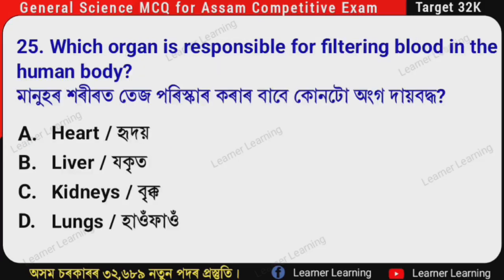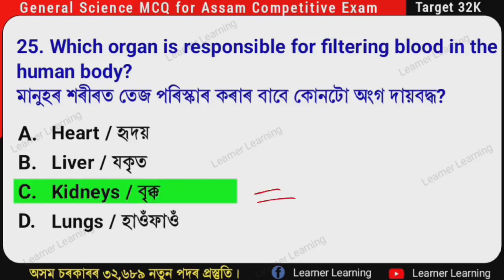Next question: Which organ is responsible for filtering blood in the human body? (Assamese: Manohar hori rot test pori skar karakorabha bhaabhe konto ongo dhai buddha?) The correct option is Option C — Kidneys. The kidneys are responsible for filtering blood in the human body.